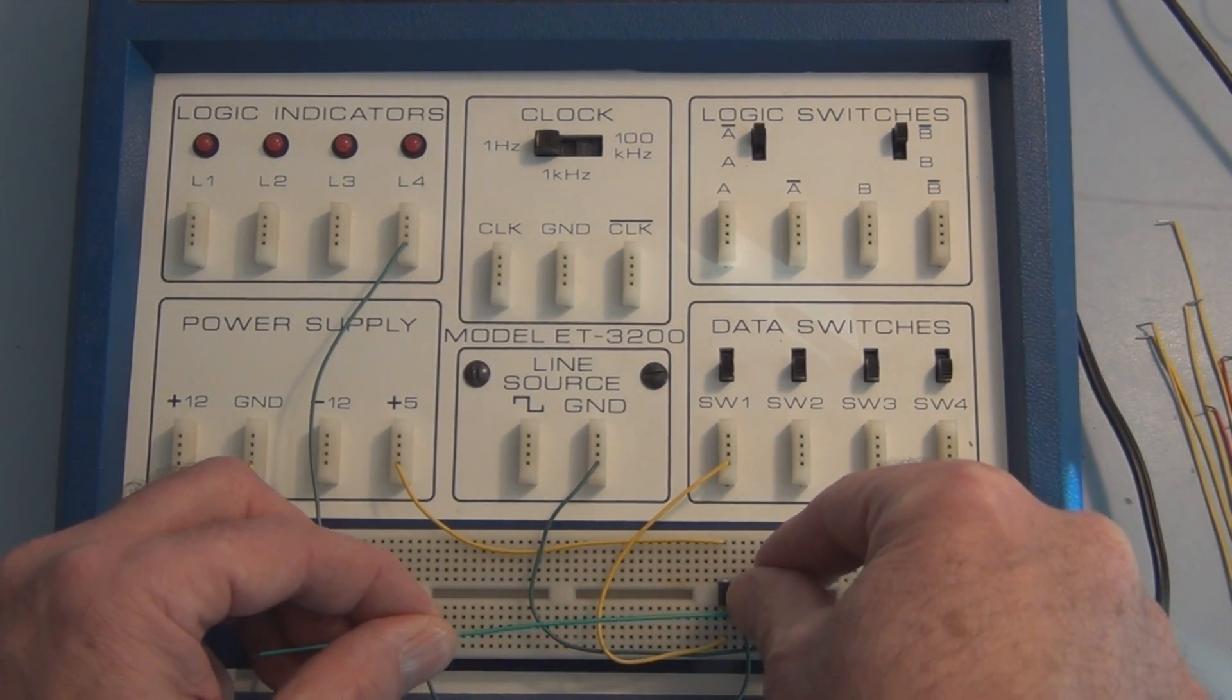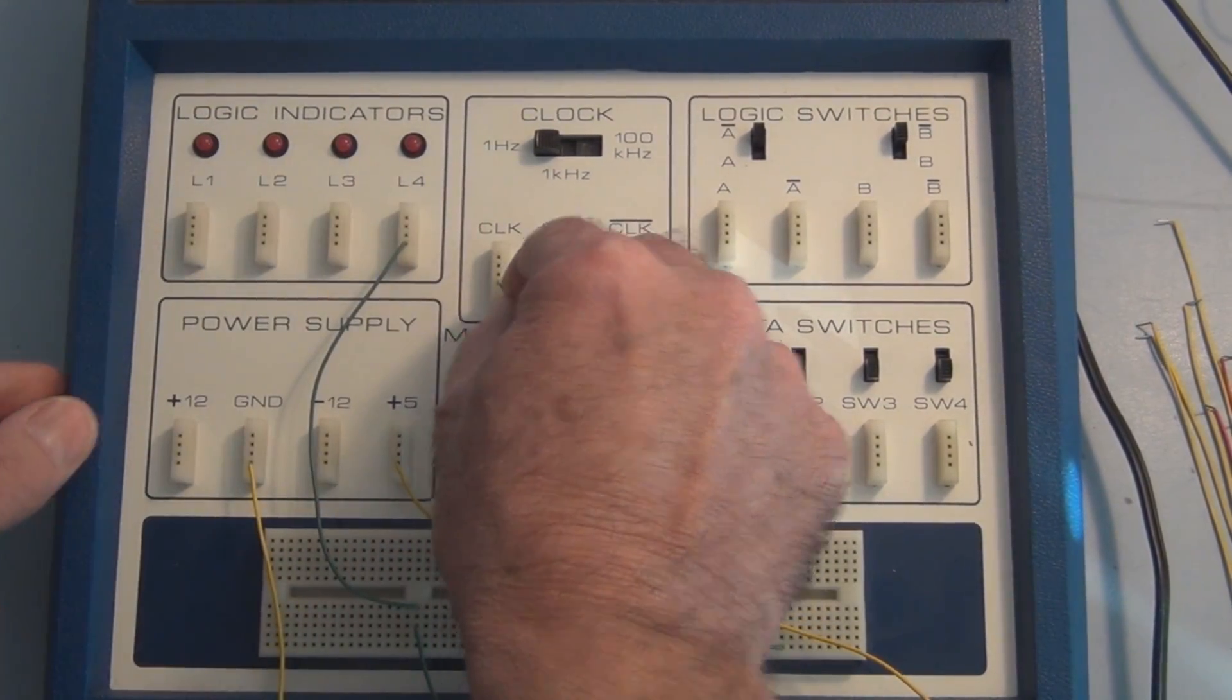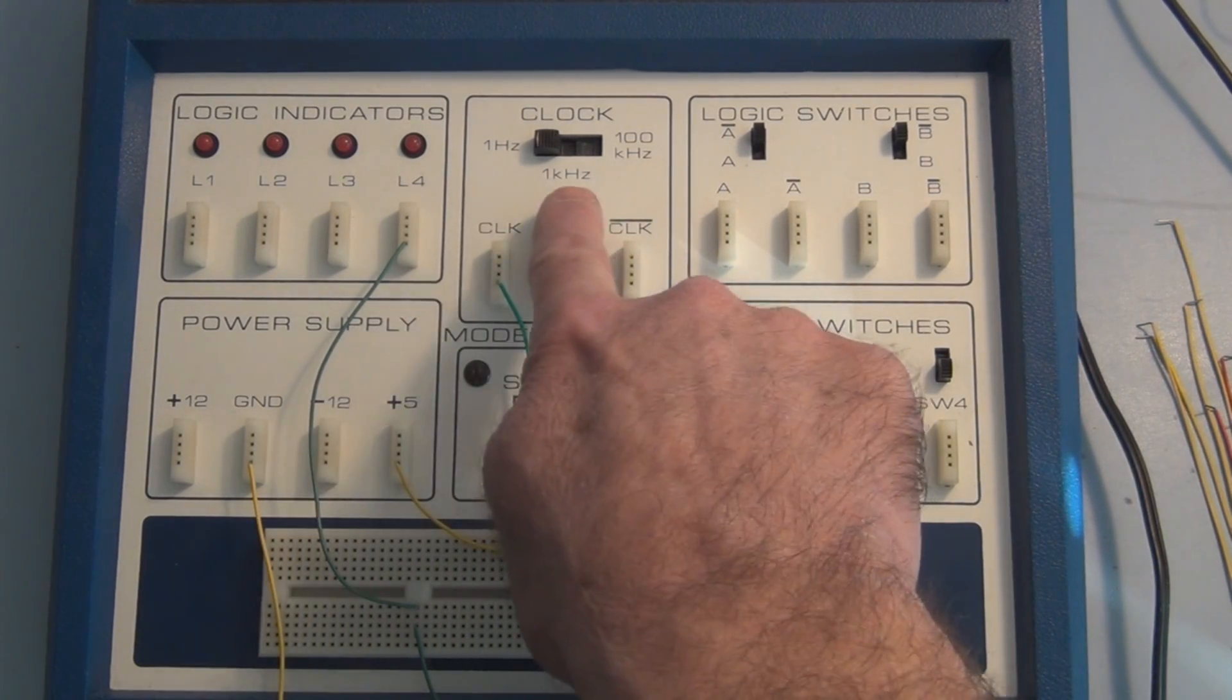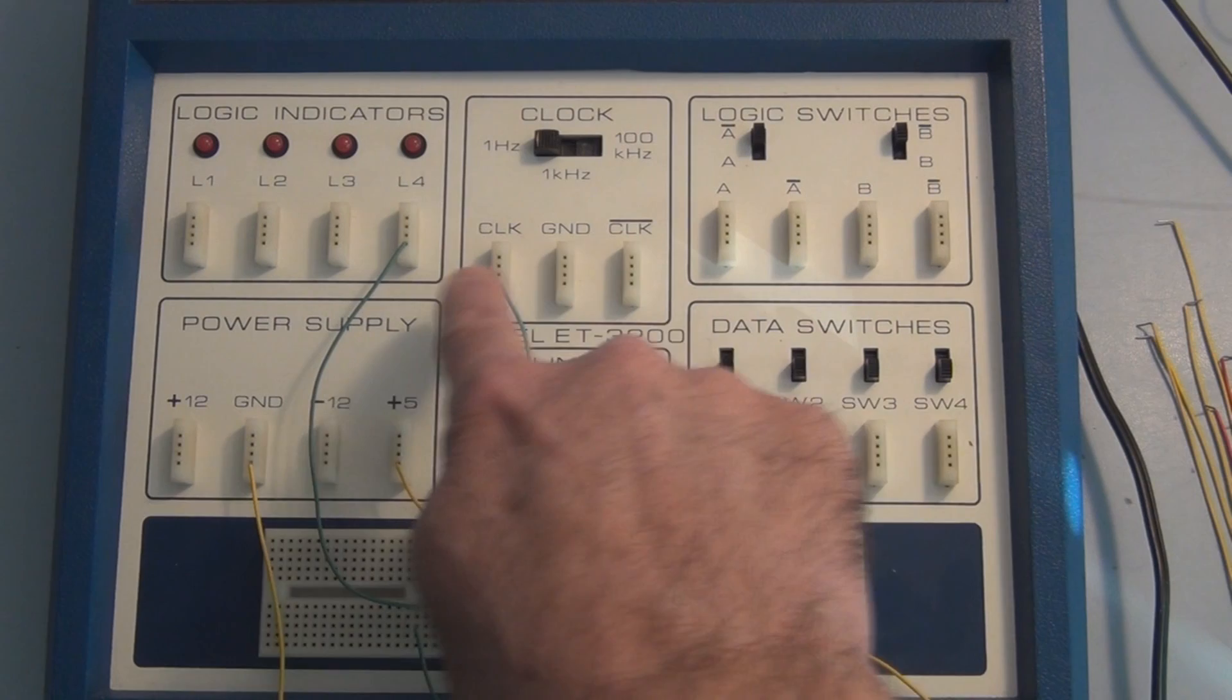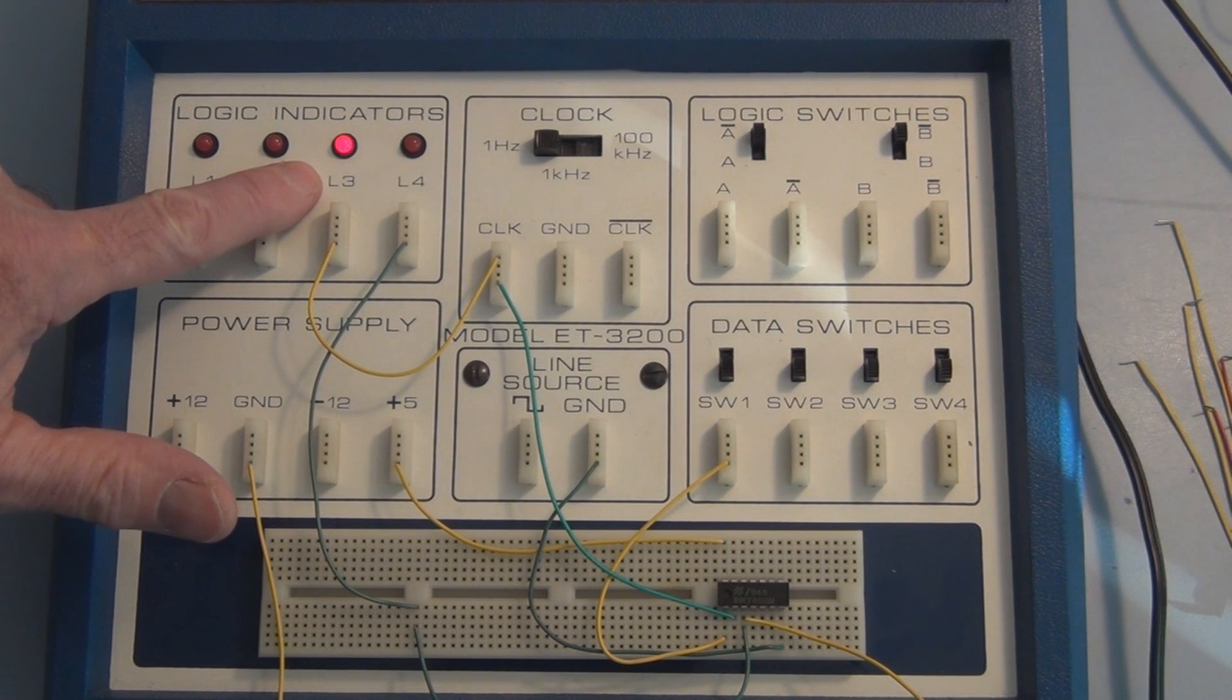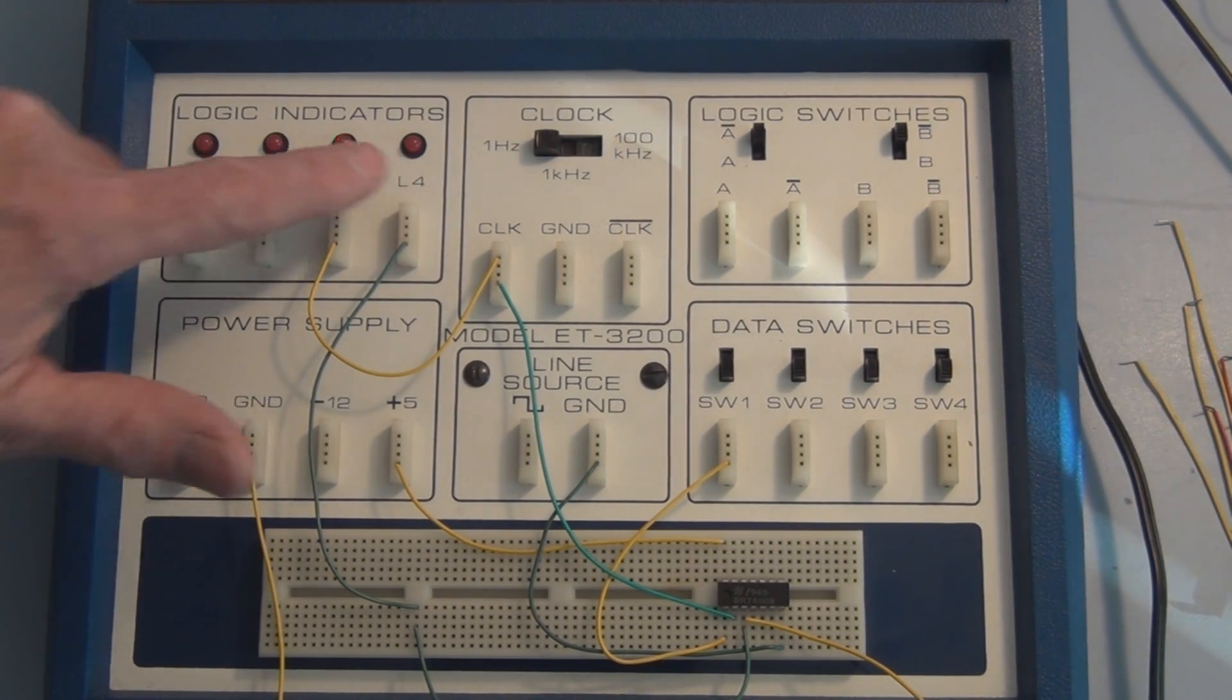So we'll connect a square wave to one of the inputs. This Heathkit digital trainer has 1 Hz, 1 kHz, and 100 kHz square waves available. So I've connected the clock signal to one of the LEDs, and this LED here is the output from the AND gate. And you can see that it's not passing through.